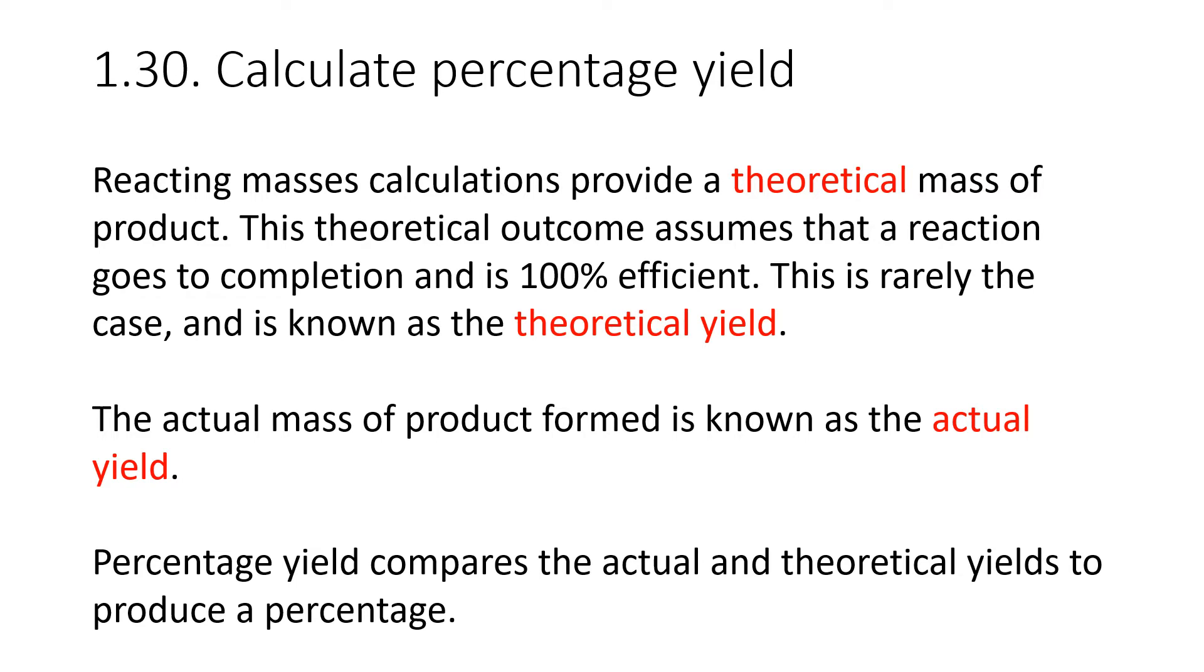But in real life, this is rarely the case. So we call this the theoretical yield. The actual mass that we produce is known as the actual yield, and we compare these two numbers to calculate a percentage that gives us a percentage yield.